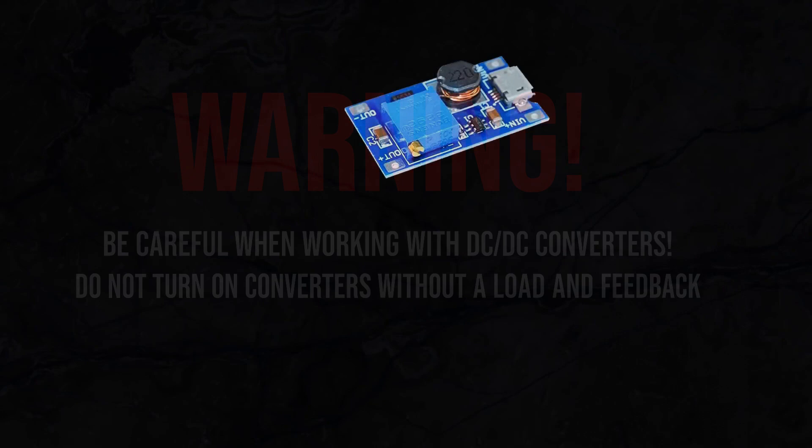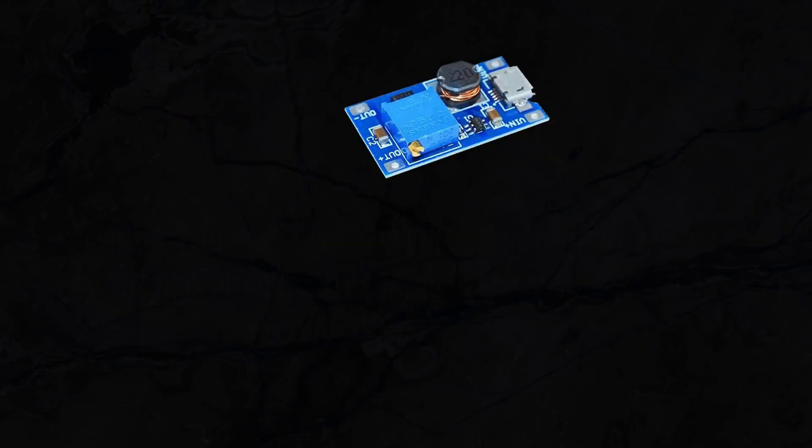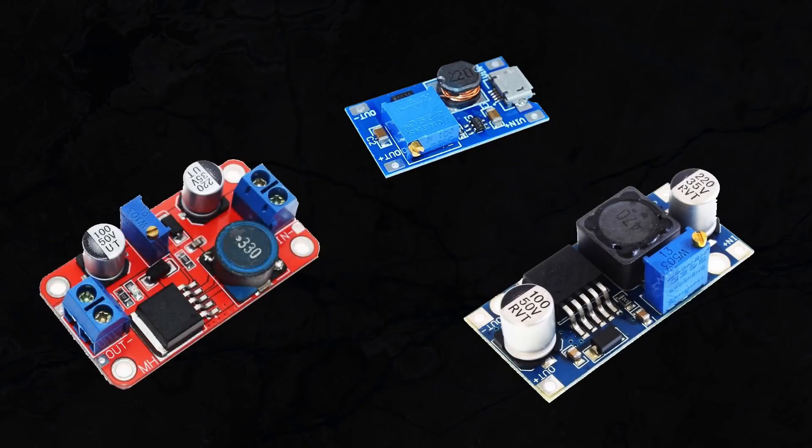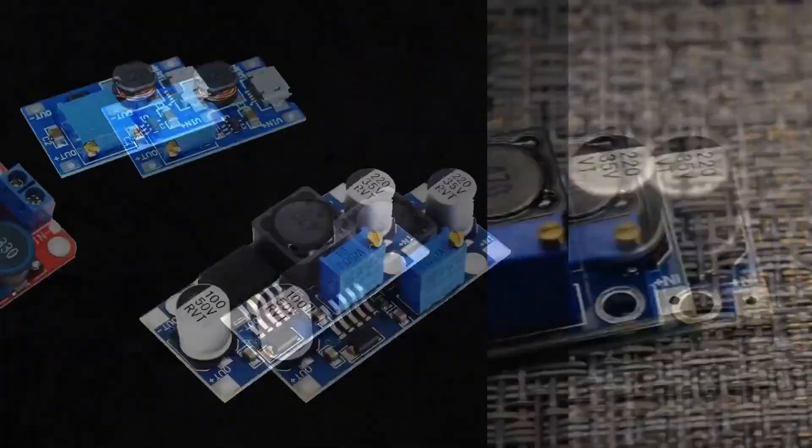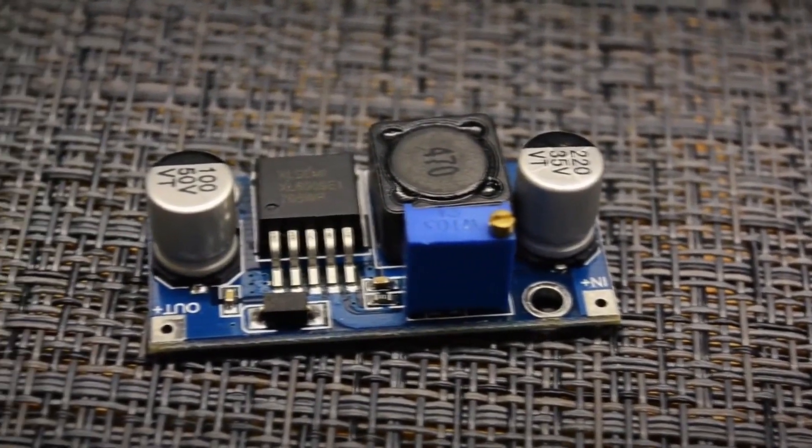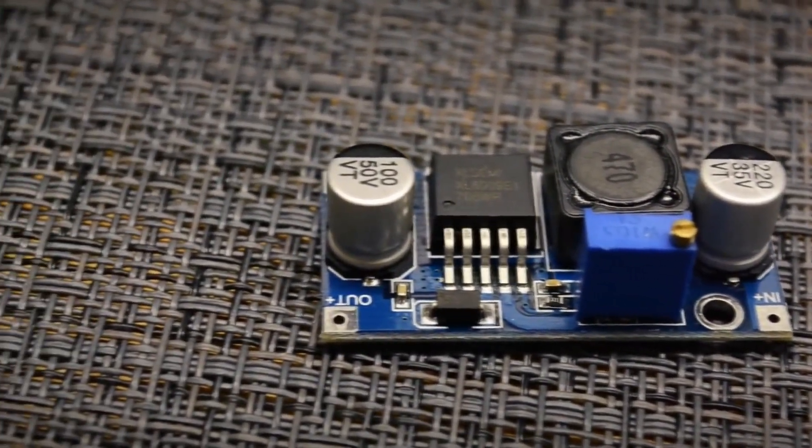Boost DC-DC converters are used in cases where we need to convert a lower DC voltage into a higher DC voltage. In practice, you have probably encountered such converters on MT3608 and XL6009 chips, which are commonly used to increase the supply voltage in standalone devices.